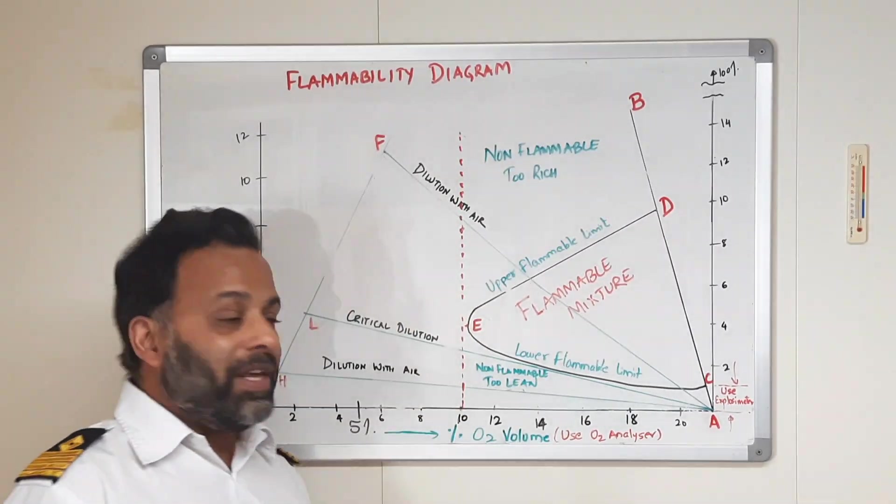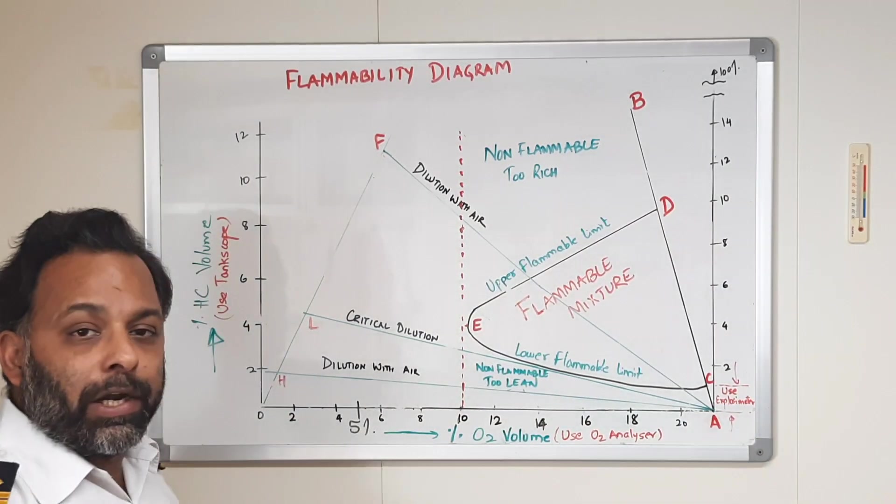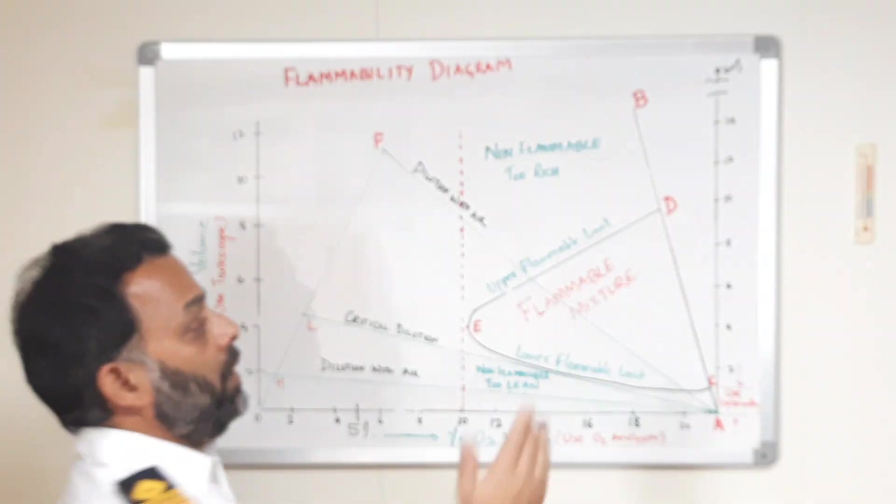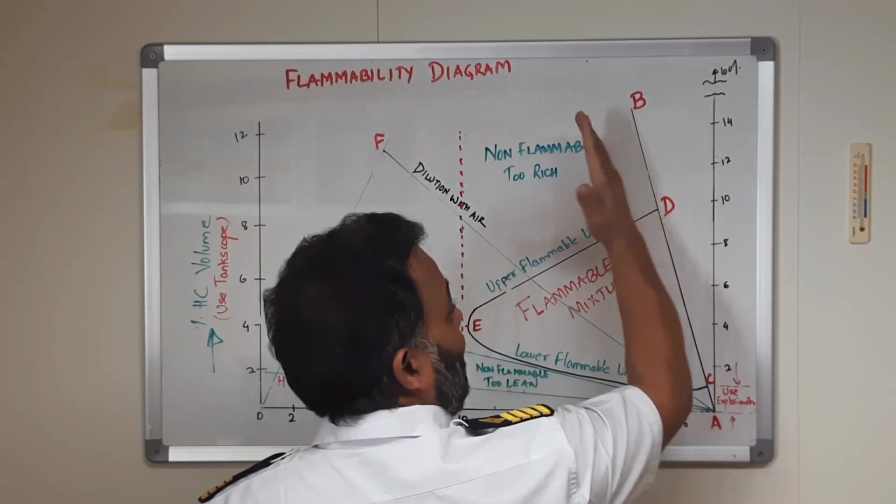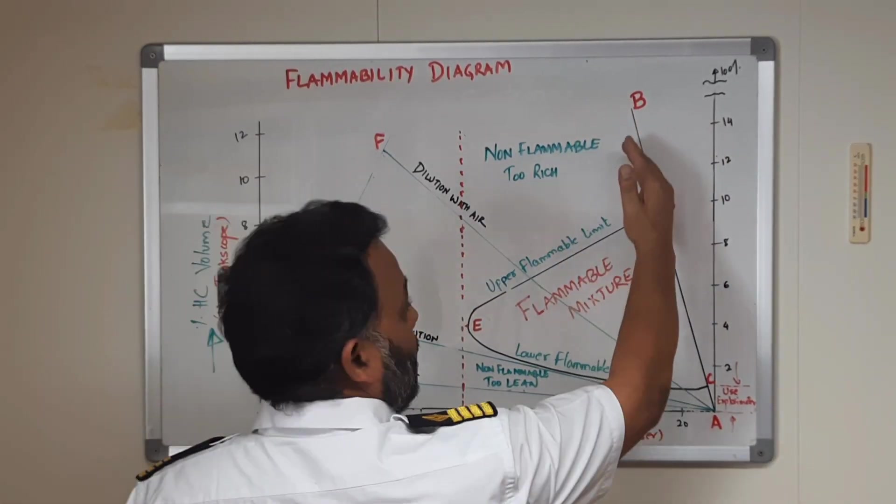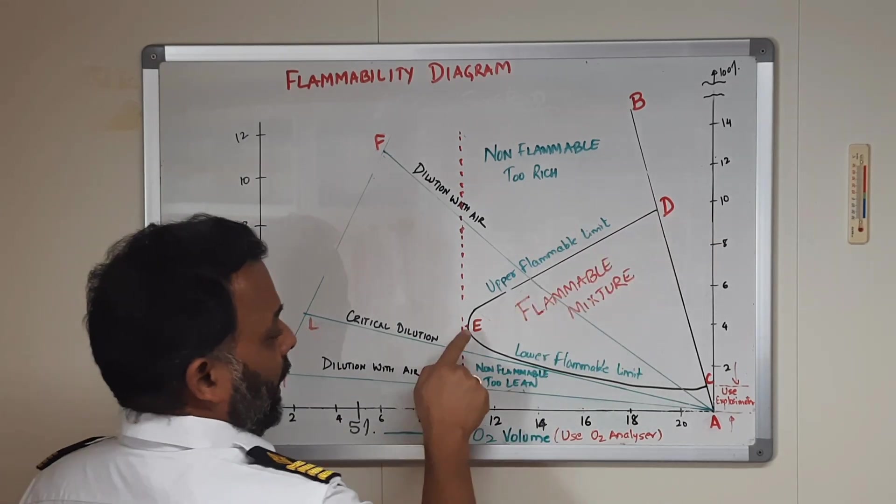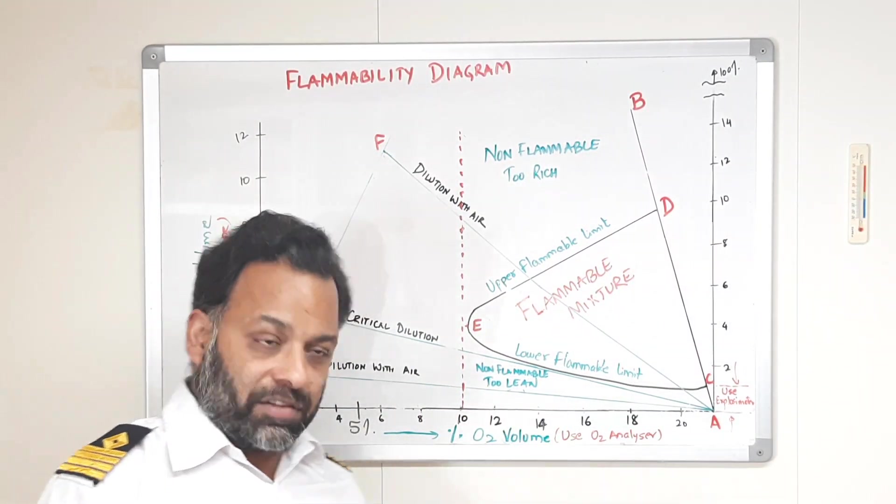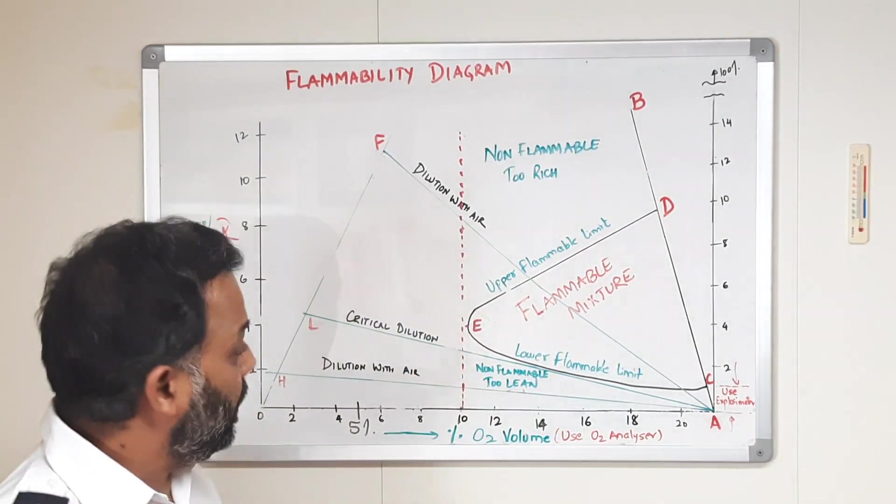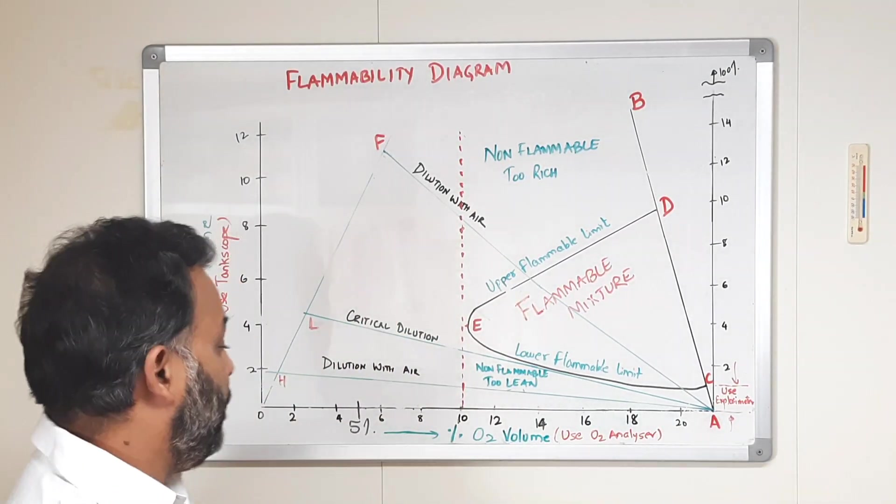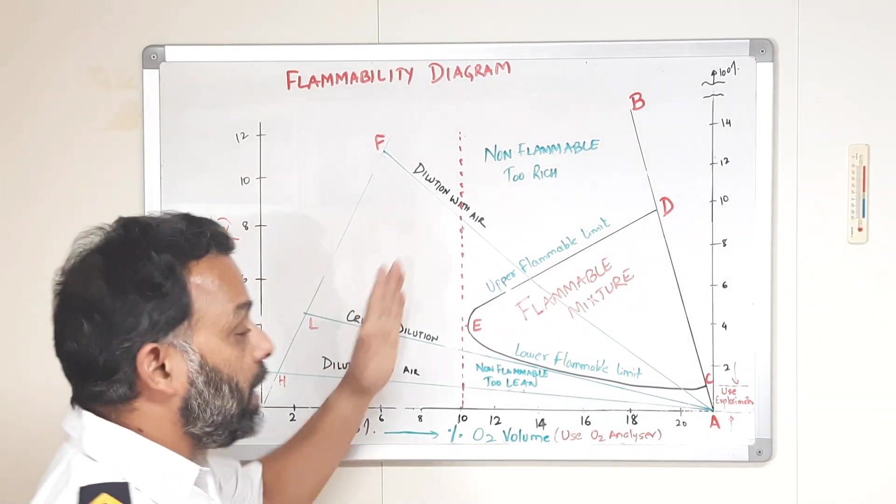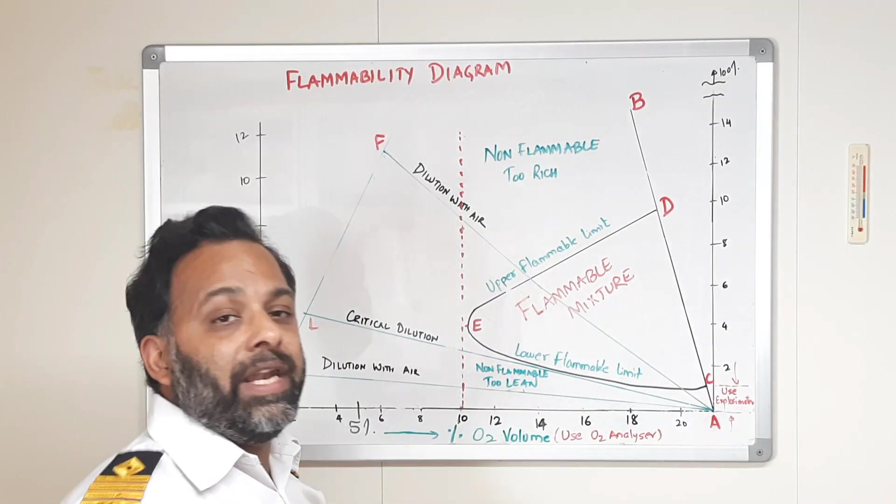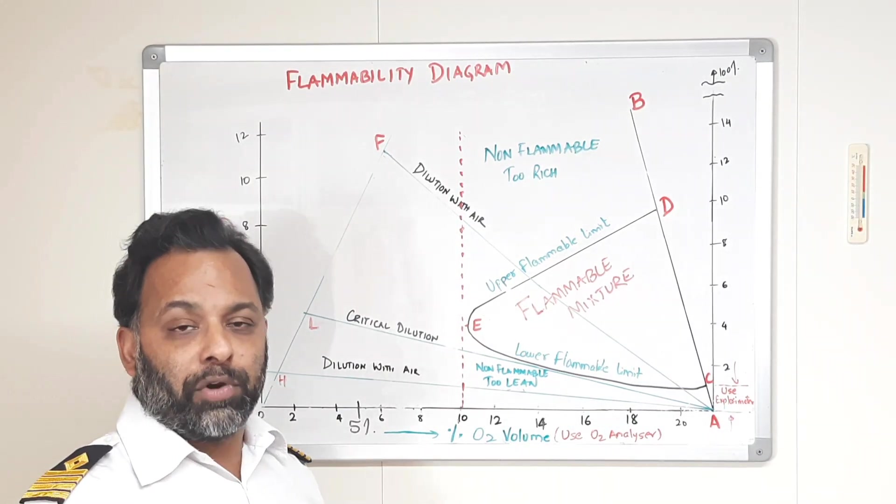Flammable mixture, so please do not get confused by how complicated it looks, there is nothing complicated about it. It is very very simple. When we go on the left of this diagram, we start inerting, we reduce the amount of oxygen. Point E is the minimum oxygen at which our fire can sustain. This is around 11%, IMO says 8% and we are following 5%. So, we keep on inerting until the oxygen level in the tank is less than 5% and then it is absolutely safe to carry petroleum products.